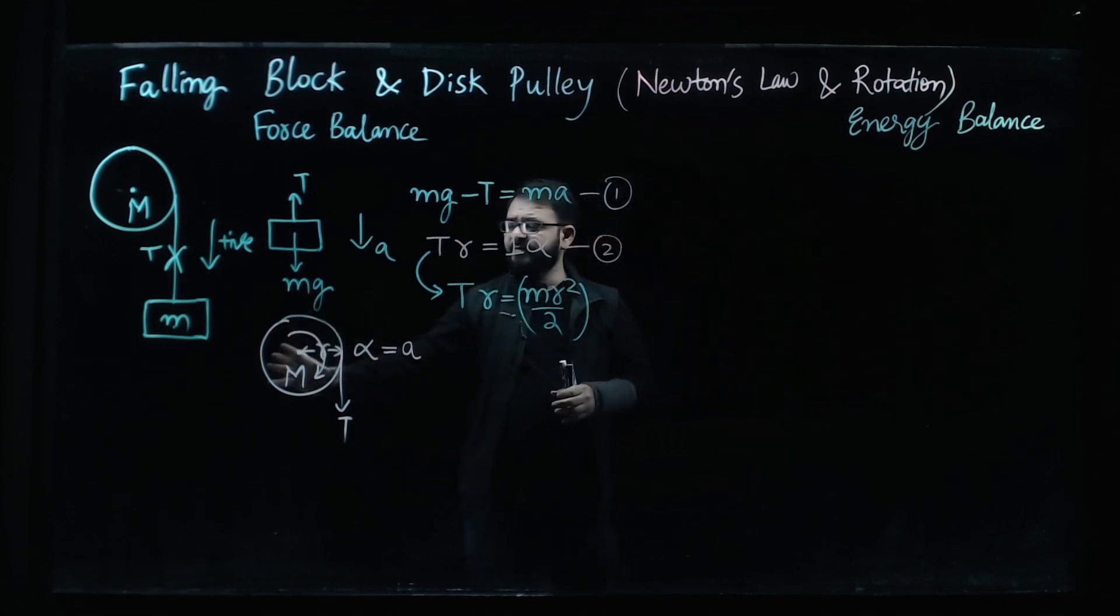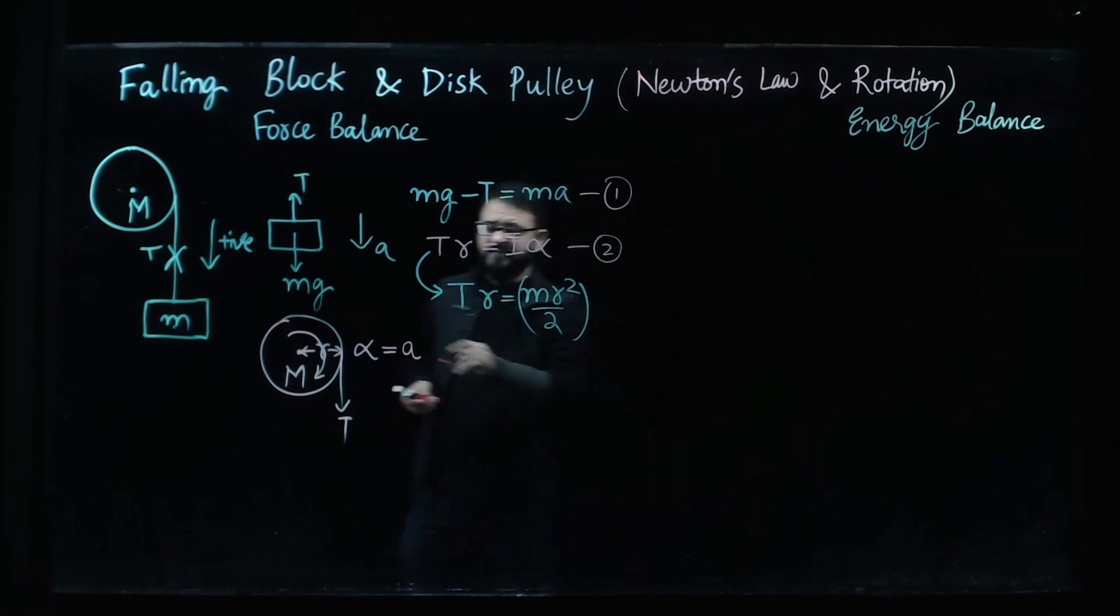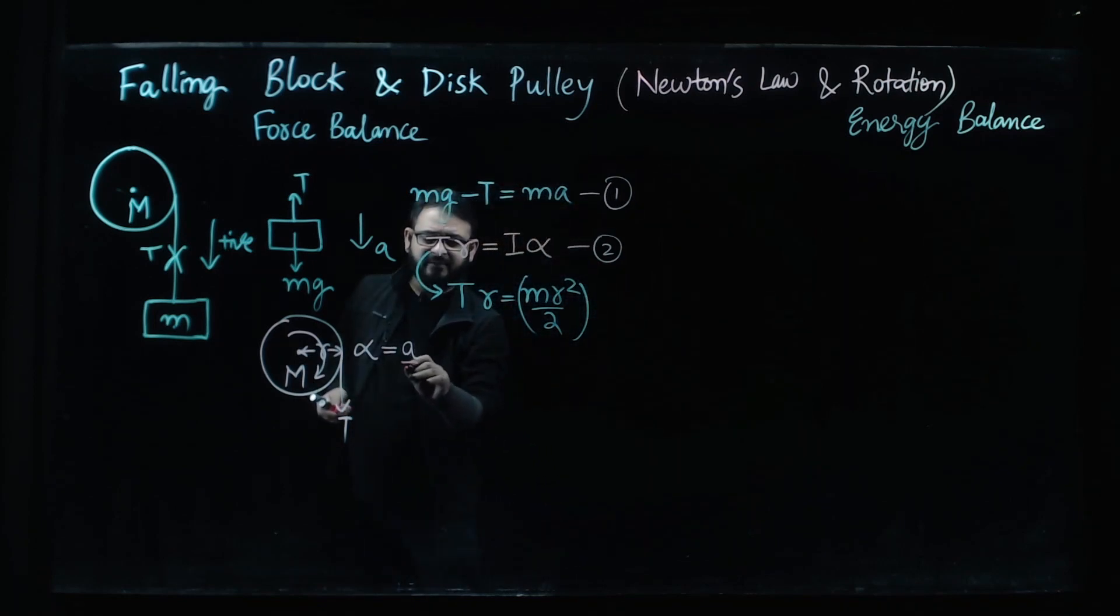The second free body diagram we have made for the disc. Now this disc is going to revolve around its axis. It has a mass m so it is going to rotate with the angular acceleration and angular acceleration is given by A upon R.